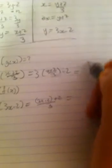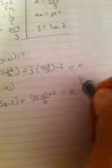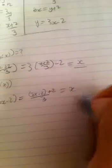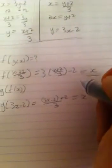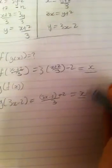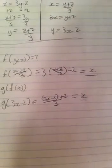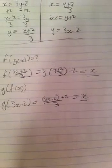Now, if they are inverse functions, these two better equal x. If only one of them equals x and the other one doesn't, then they're not inverse functions, but if they both equal x, then they are inverse functions of each other.